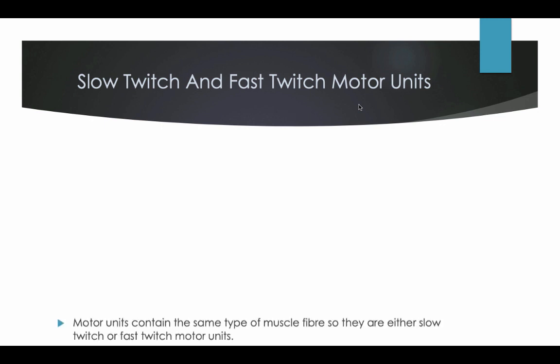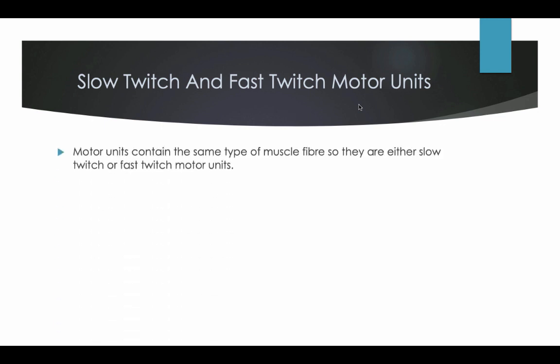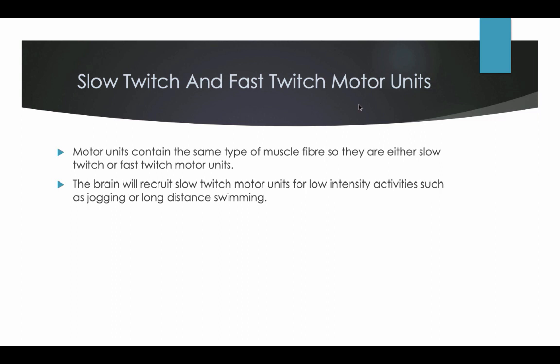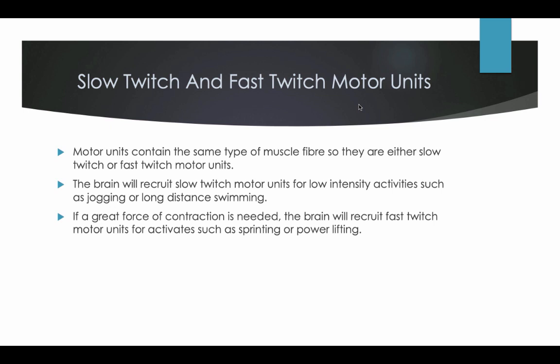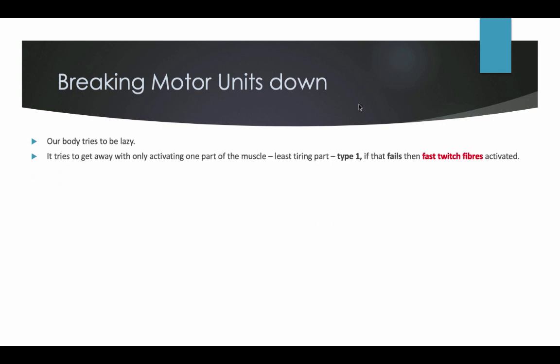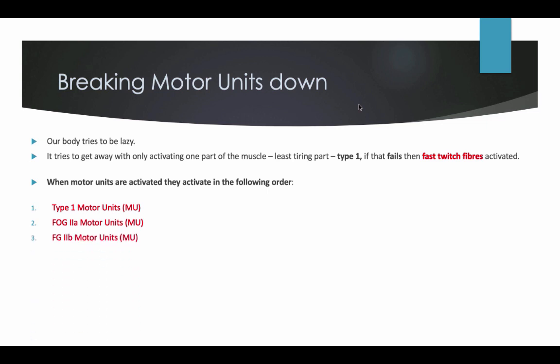Slow twitch and fast twitch motor units. Motor units contain the same type of muscle fibres, so they are either slow twitch or fast twitch motor units. The brain will recruit slow twitch motor units for low intensity activities such as jogging or long distance swimming. If a greater force of contraction is needed, the brain will recruit fast twitch motor units for activities such as sprinting or power lifting. Our bodies try to be efficient, activating the least tiring part first — the type 1 fibres. If these fail, then fast twitch fibres are activated. When motor units are activated, they activate in the following order: type 1, then type 2A, and then type 2B.